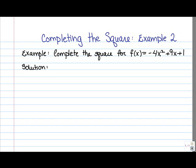In this video, we're going to look at an example of completing the square. In particular, we're going to complete the square for the function f(x) = -4x² + 9x + 1. What that means is we're going to write it, rather than in the form ax² + bx + c that it's currently in, into the new form a(x - h)² + k.